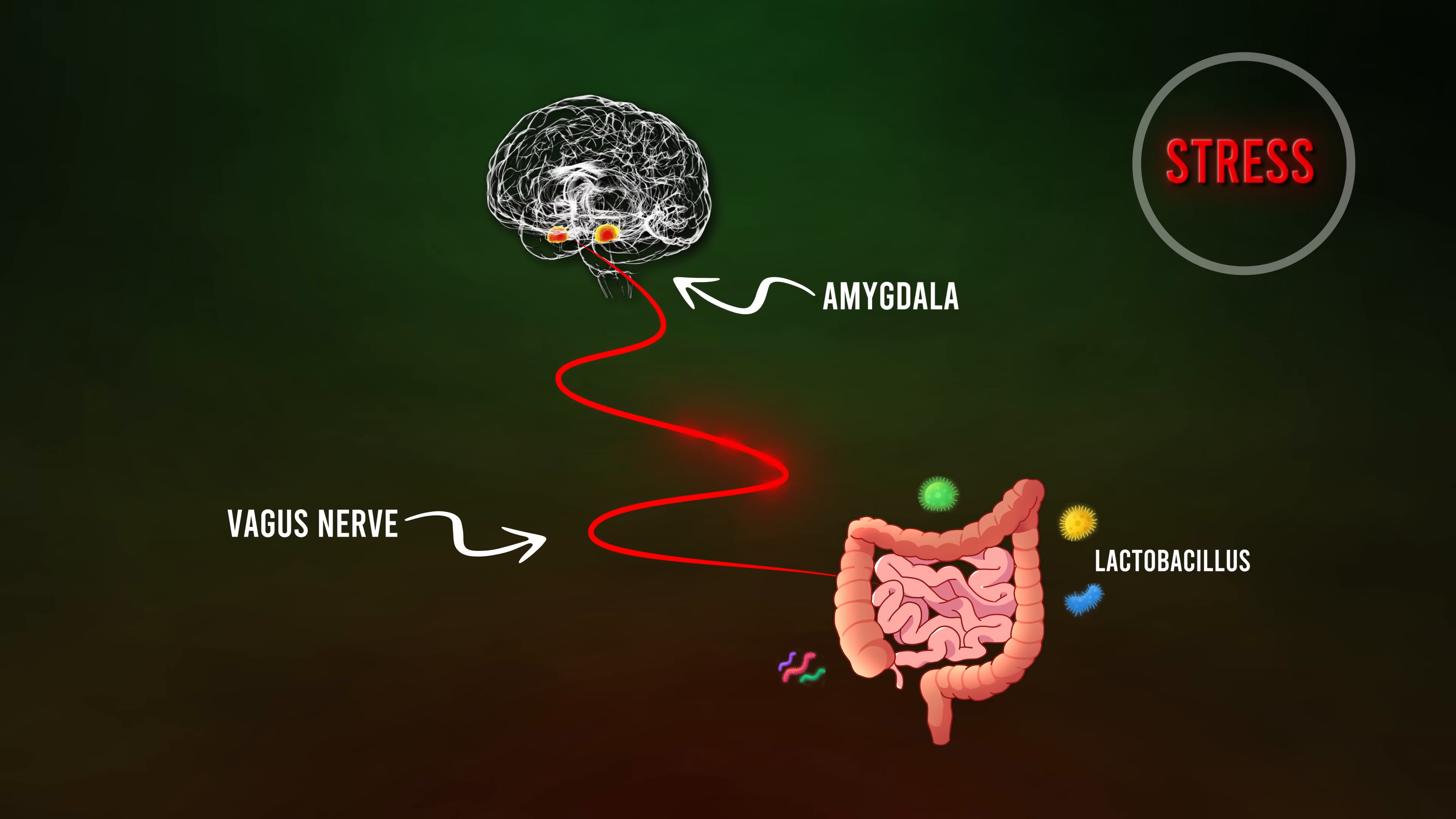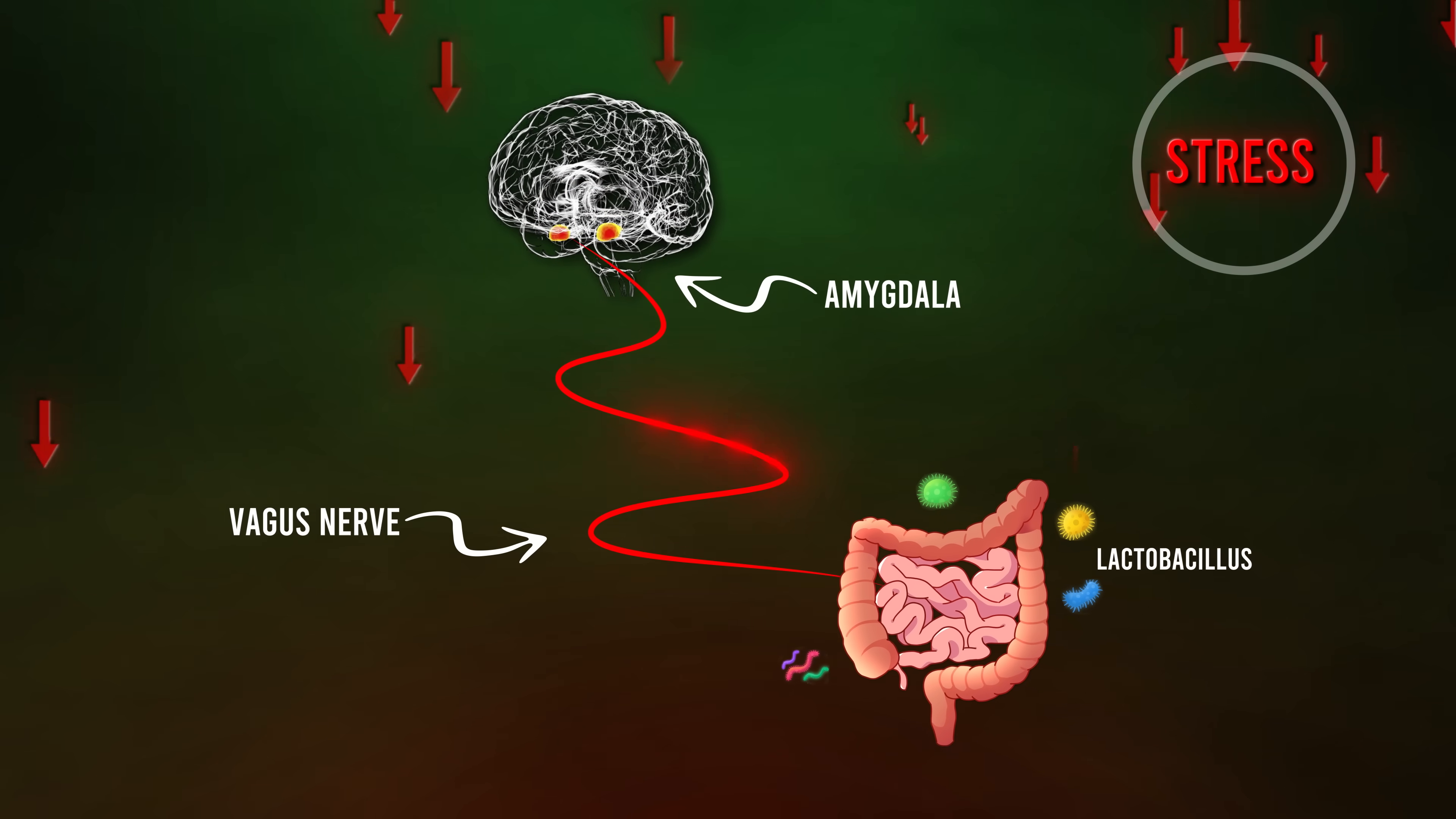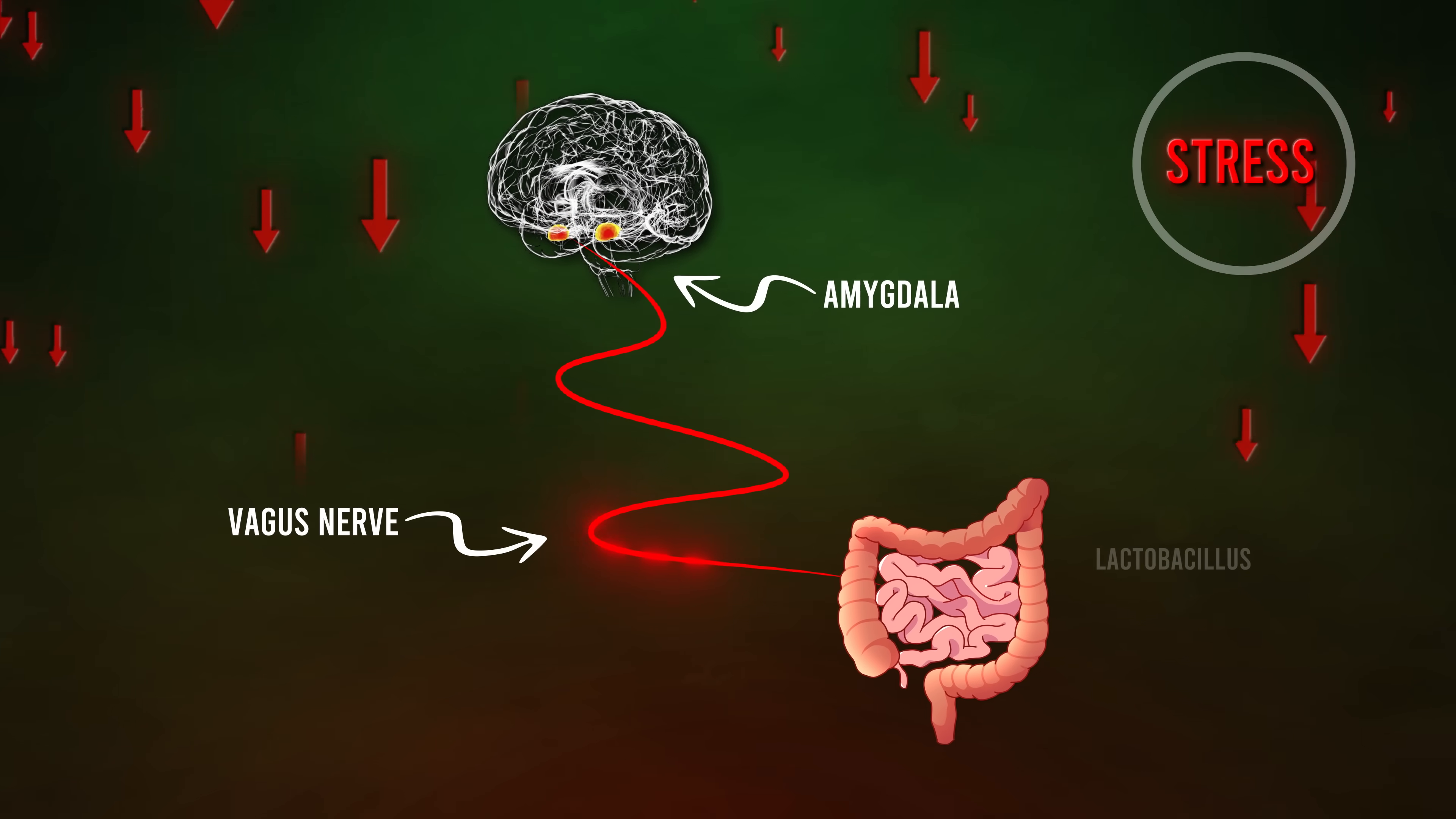Conversely, stress decreases signaling from the central amygdala to Bruner's glands, thus depleting lactobacillus, starving them off, leading to bloating, leaky gut, among other unfortunate effects.